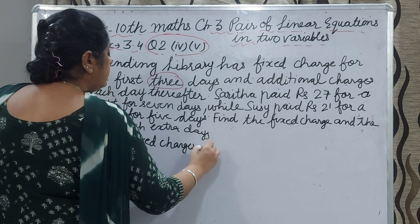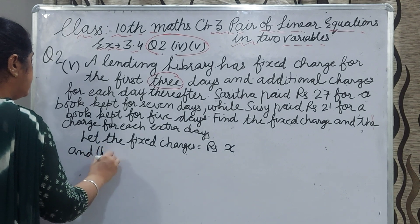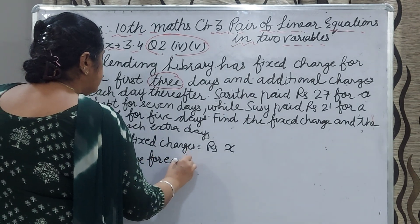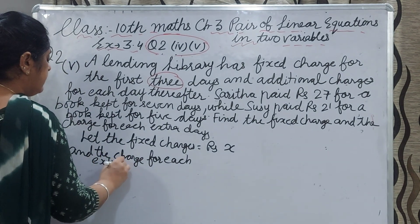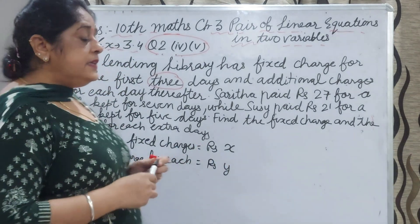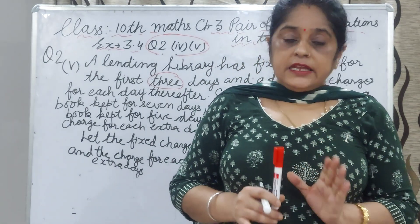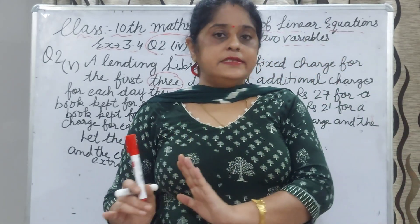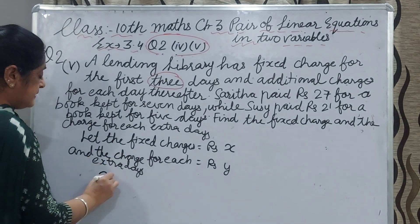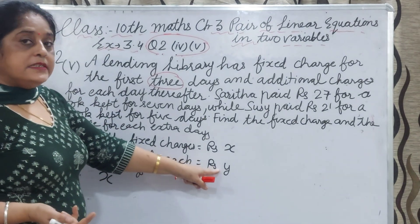And the charge for each extra day we assume as rupees y. Sarita paid 27 rupees for 7 days. In the 7 days, 3 days charge is fixed and the remaining days are 4. We will write the statement: x and 7 minus 3 is 4. Means 1 day charge for extra day is y and 4 day charge is 4 into y. x plus 4y is equal to 27.